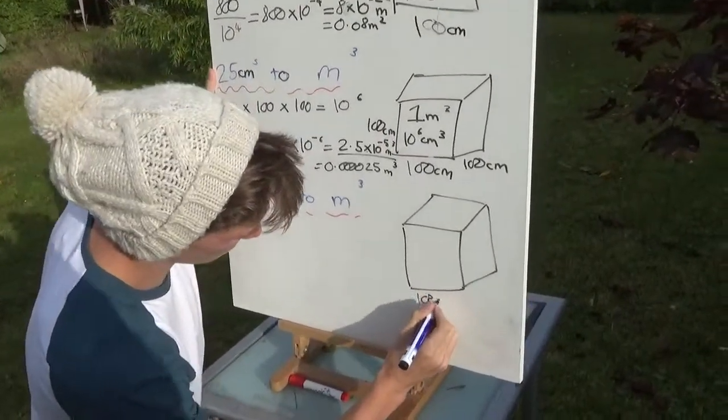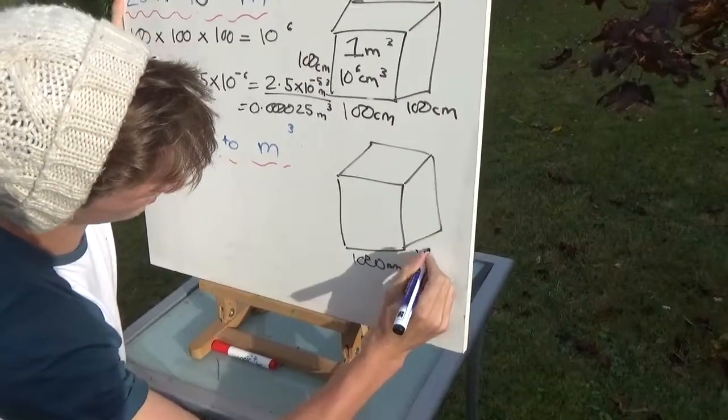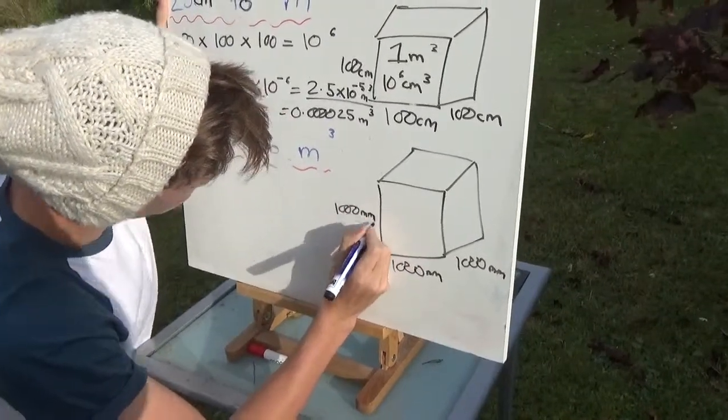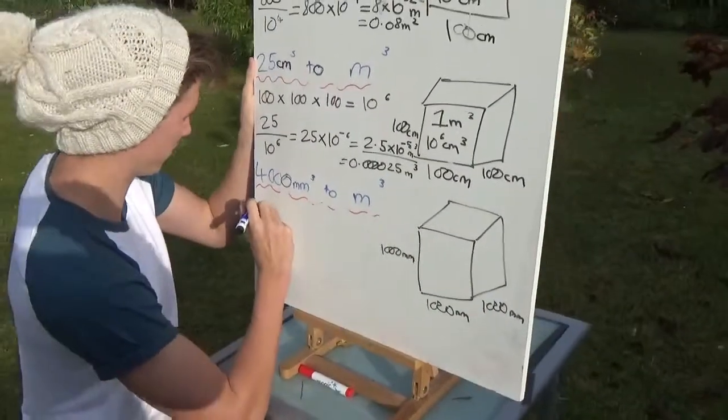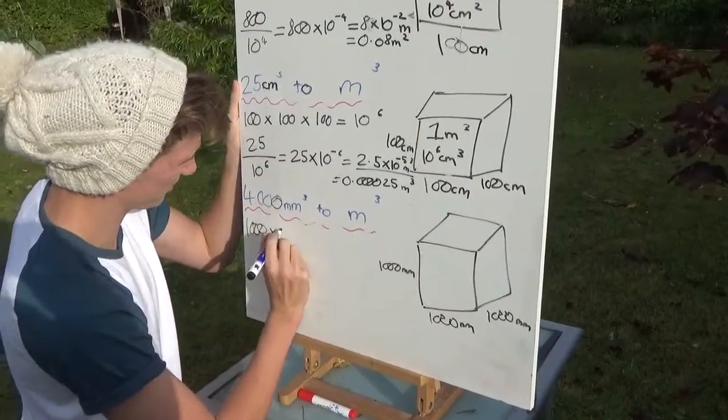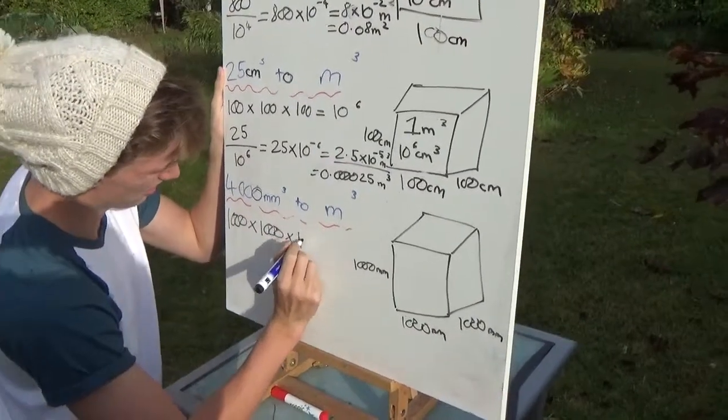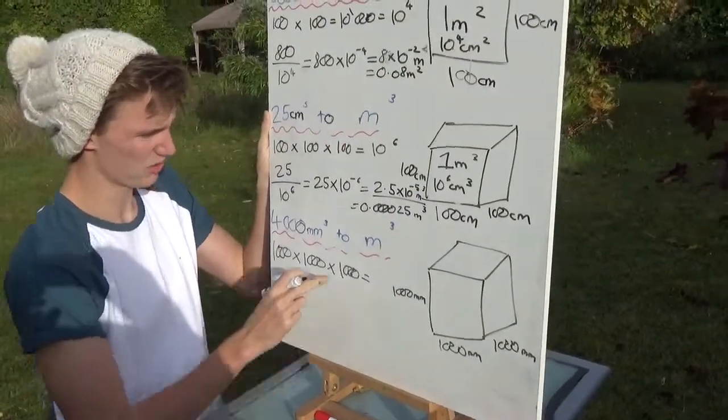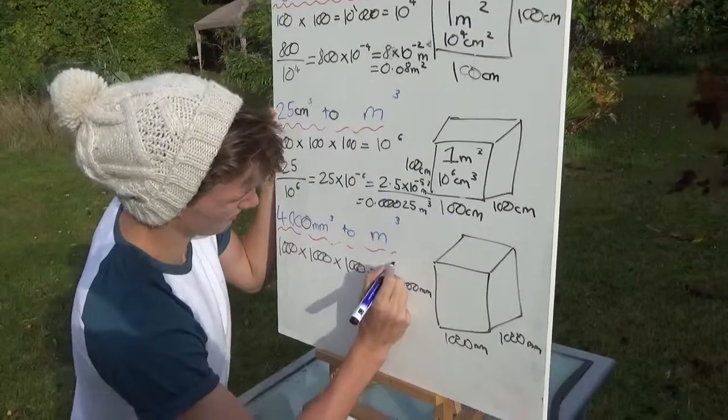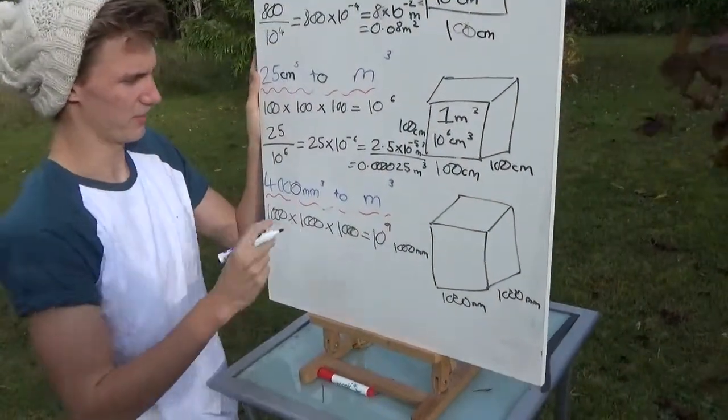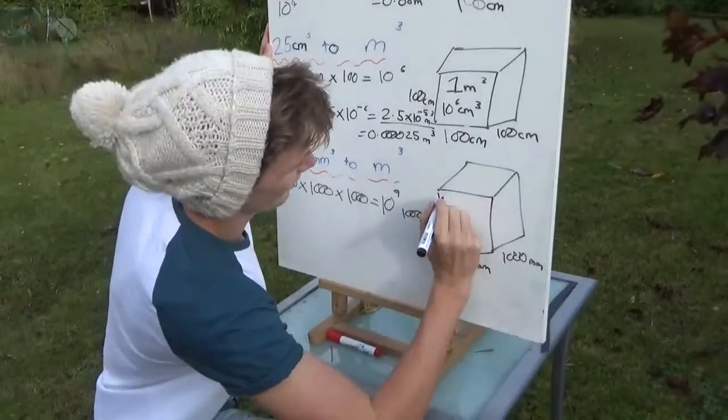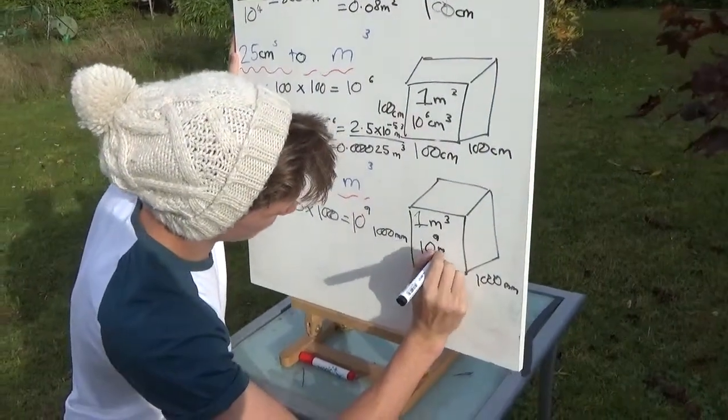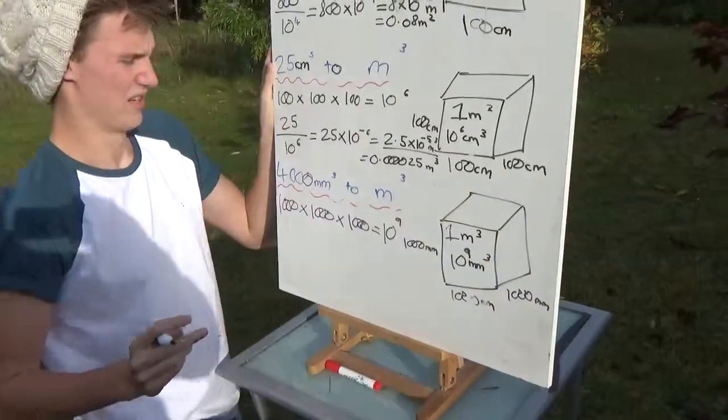We know there's 1,000 millimeters in one meter, so we're going to have 1,000 millimeters by 1,000 millimeters by 1,000 millimeters. So multiply those all together to find the conversion factor: 1,000 times 1,000 times 1,000 equals, well it's going to be one followed by nine zeros, or 10 to the 9. So 10 to the 9 conversion factor. Would you fill in the cuboid? One meter cubed is 10 to the 9 millimeters cubed.